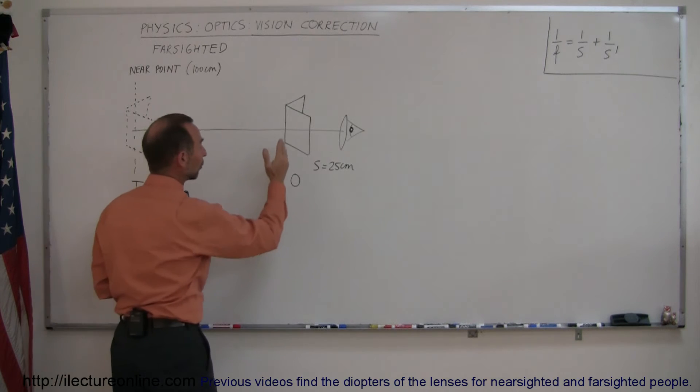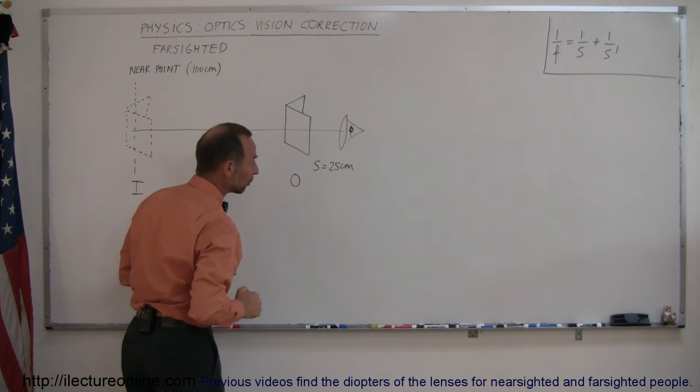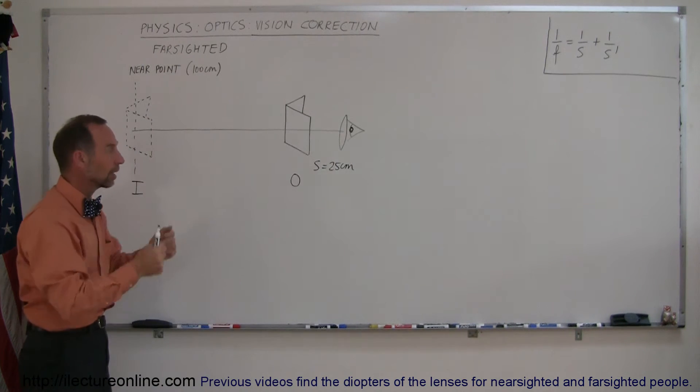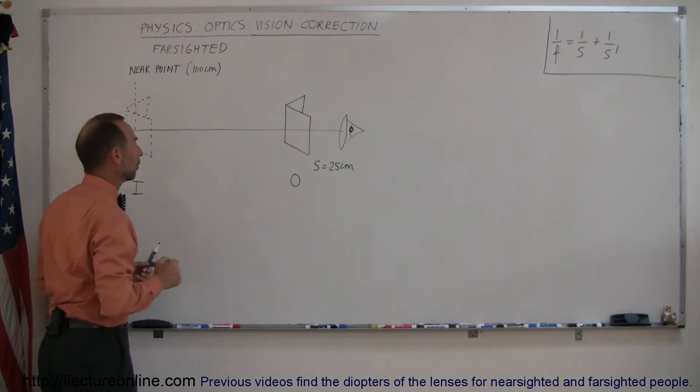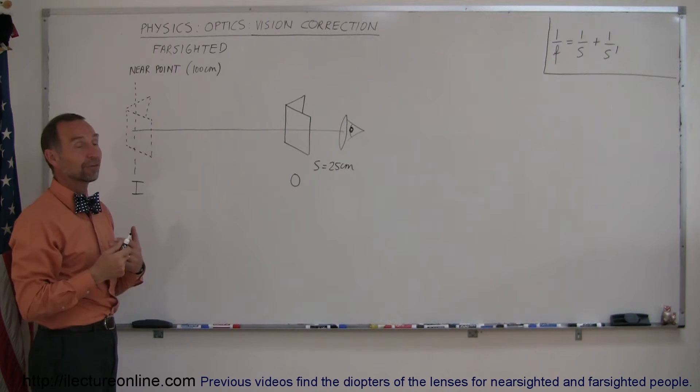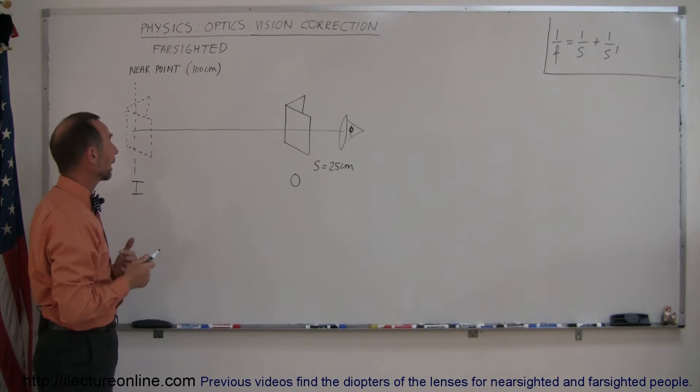So if the person holds a book at a reasonable distance, 25 centimeters away or 10 inches, then an image will be formed at the near point. And so what kind of focal length do those reading glasses need?